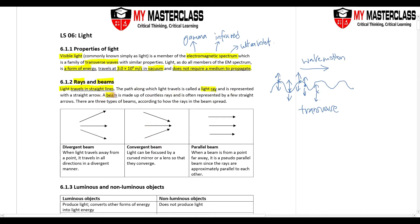A beam, on the other hand, is made out of countless rays. We only represent it using a few straight lines — it doesn't make sense to draw 50 arrows to represent a beam. So I only draw 3 to represent 3 million light rays.